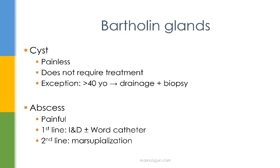If the cyst is in any way symptomatic, or if it's an abscess, then the first-line treatment is incision and drainage, and if you would like, the addition of a Word catheter. If that fails, you can try marsupialization. Marsupialization is when a slit is cut into the abscess, then the edges are sutured so the slit remains open, allowing the cyst or abscess to drain freely.